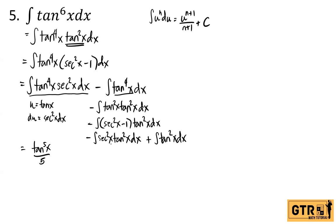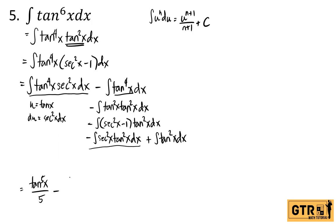To integrate tangent to the 4th x, we reapply the technique: break it into tangent squared x times tangent squared x dx, then use the identity. This gives minus the integral of secant squared x minus 1 times tangent squared x dx. Distributing, we get the integral of tangent squared x times secant squared x dx, plus the integral of tangent squared x dx. Applying the u to the n du formula again with u equals tangent x, we get tangent cubed x over 3.